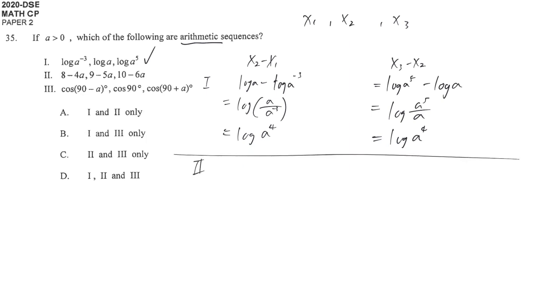We start working on the second sequence. We have 9 - 5a minus (8 - 4a). We get 1 - a. The second difference also gives 1 - a. So the second one is also an arithmetic sequence.